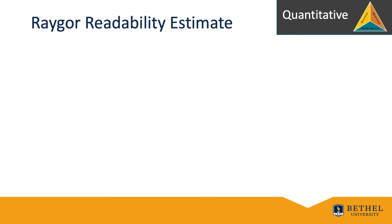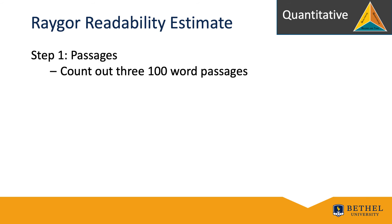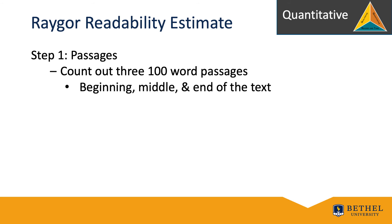So how do we use Rager, and what are the things to keep in mind when quantitatively scoring a text using the Rager readability estimate? Step 1: Passages. First, count out three 100-word passages. Oftentimes, this is best done at the beginning, middle, and end of a text — or the beginning, middle, and end of a chapter, or beginning, middle, and end of a short story.